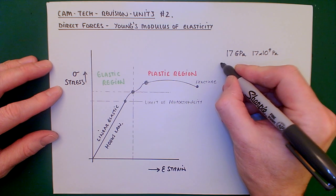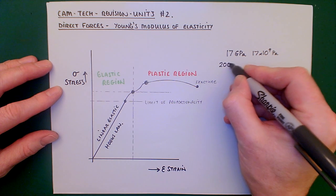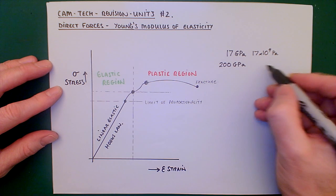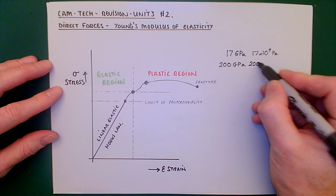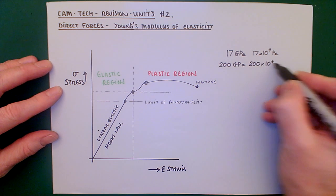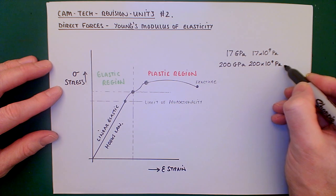As opposed to something like, for example, steel. It might have 200 gigapascals. So we're looking at 200 times 10 to the 9 pascals. It's quite large numbers.